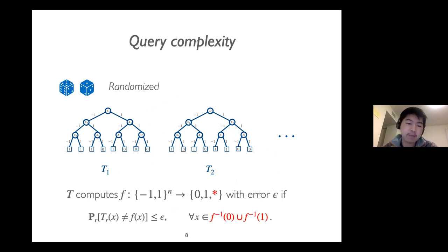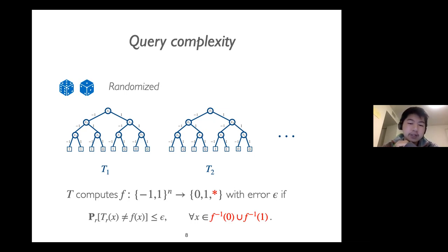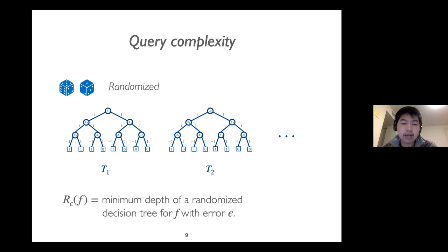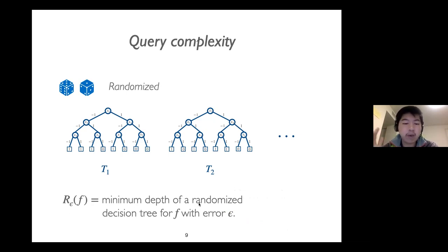Sometimes the functions are not defined on the entire Boolean cube, and we call such functions partial functions. The correctness criteria for these kinds of functions only applies to the inputs with the defined output. The randomized query complexity of a problem f with respect to the error parameter epsilon is defined to be the minimum depth of a randomized decision tree for f with error epsilon.